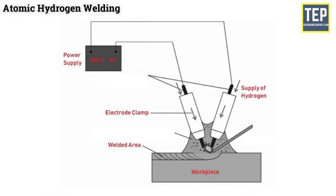Atomic hydrogen welding is an extremely high temperature form of welding, also known as arc atomic welding. This type of welding requires using hydrogen gas to shield two electrodes formed of tungsten. It can reach temperatures above an acetylene torch, and it can be done with or without filler metal.